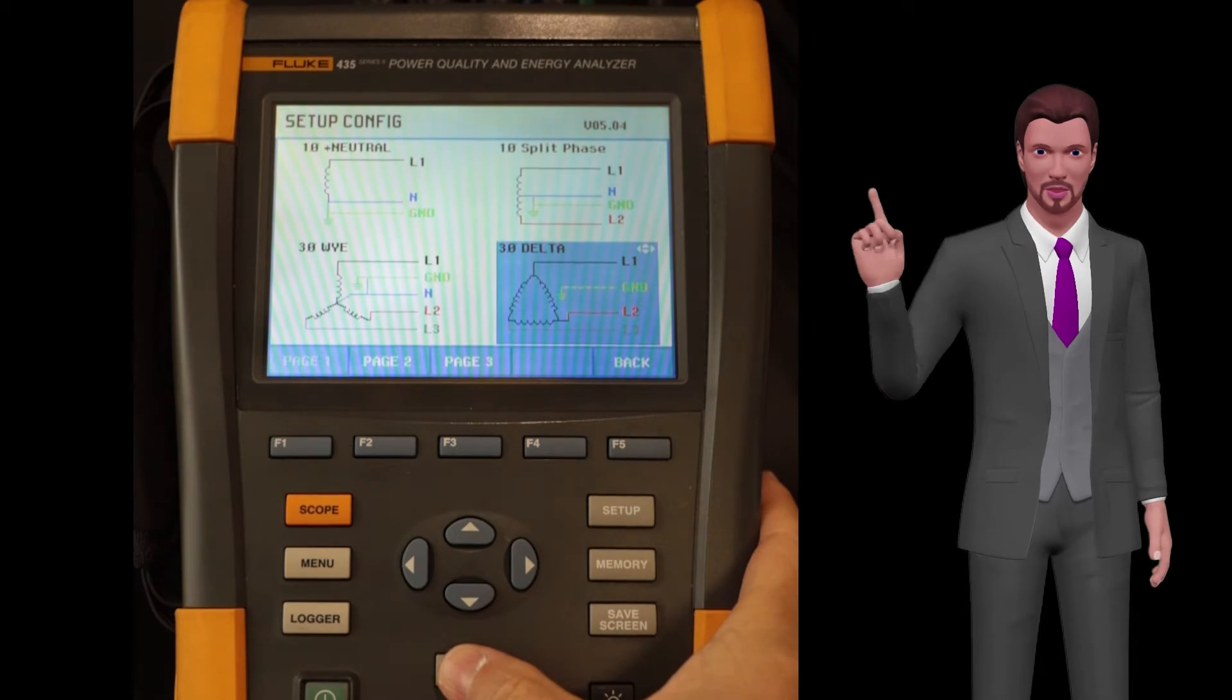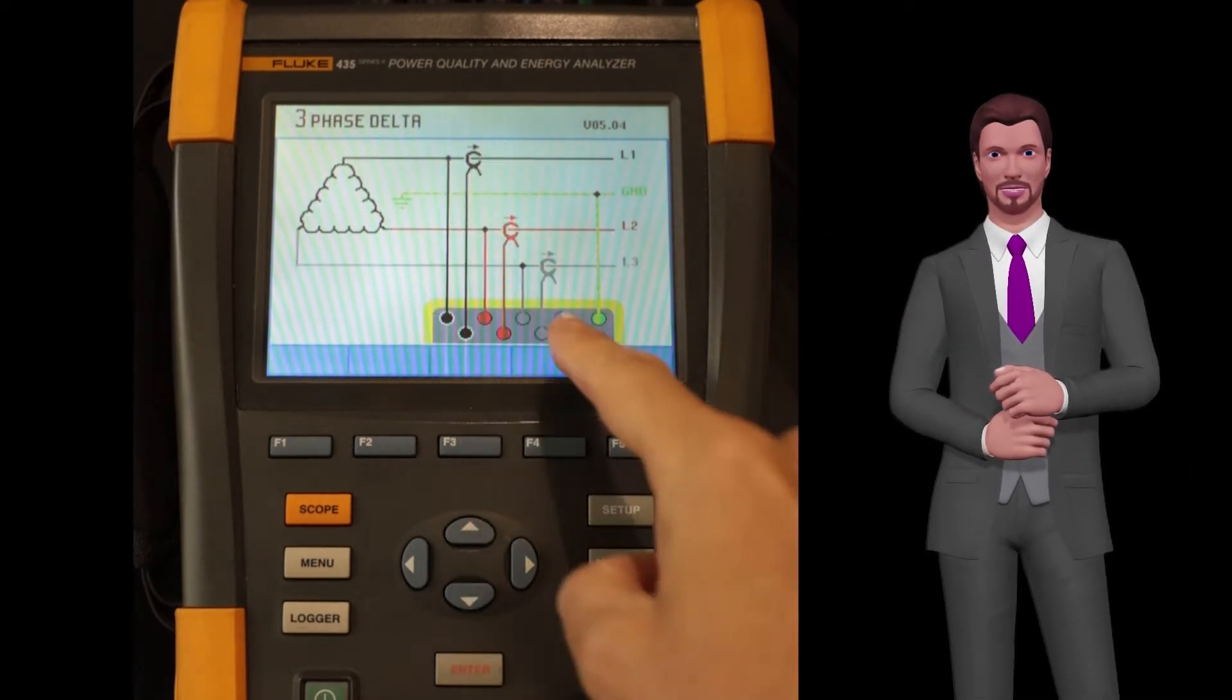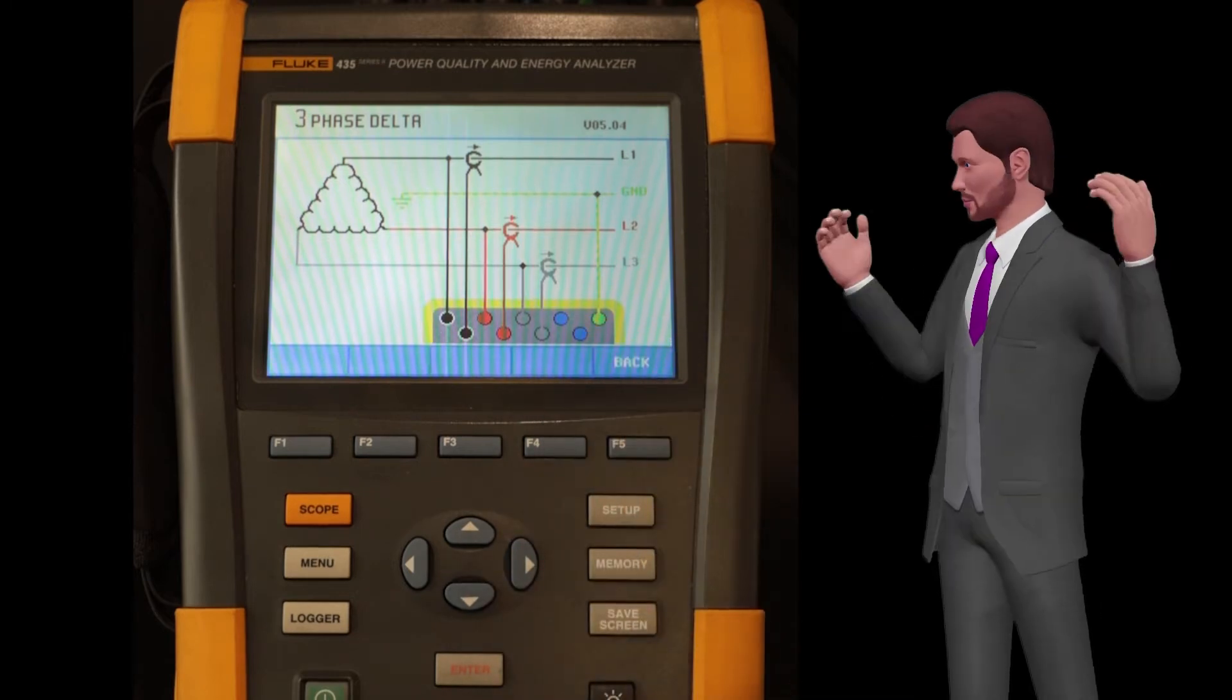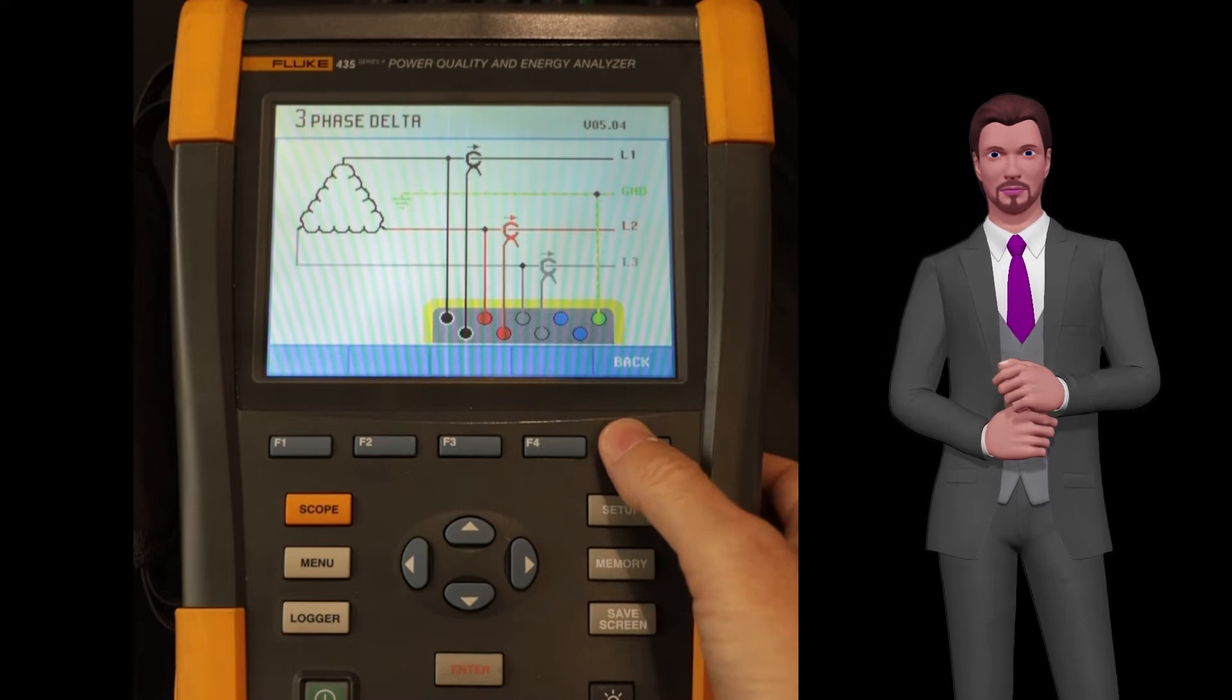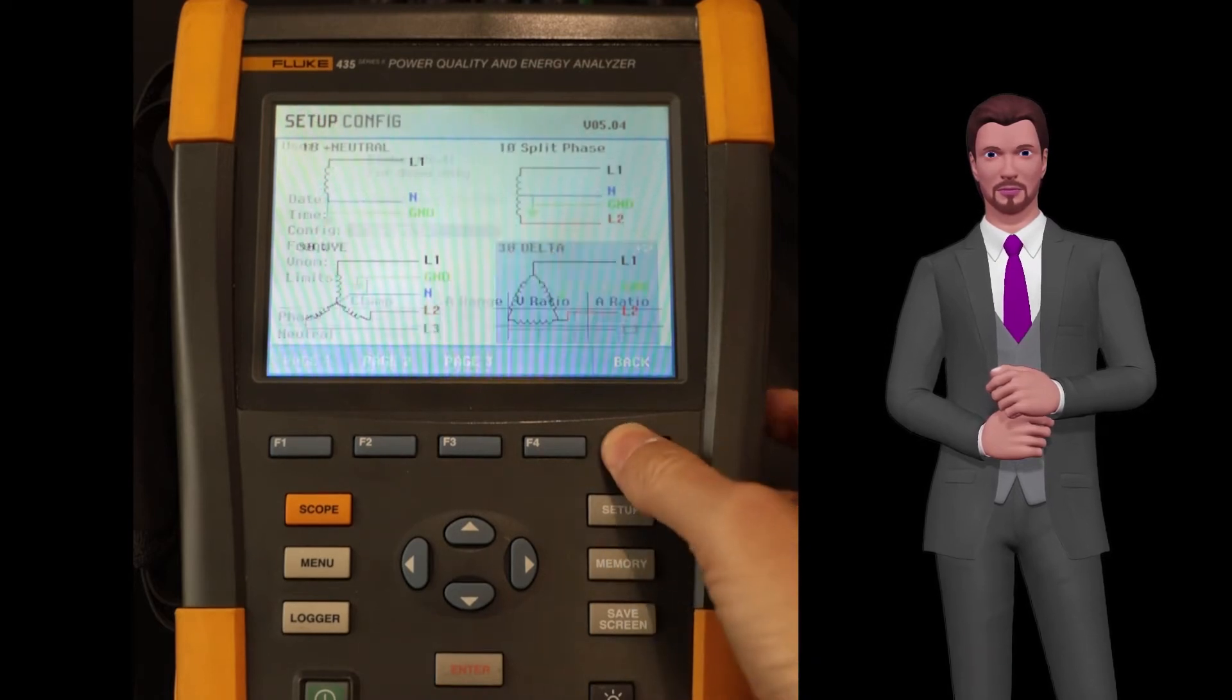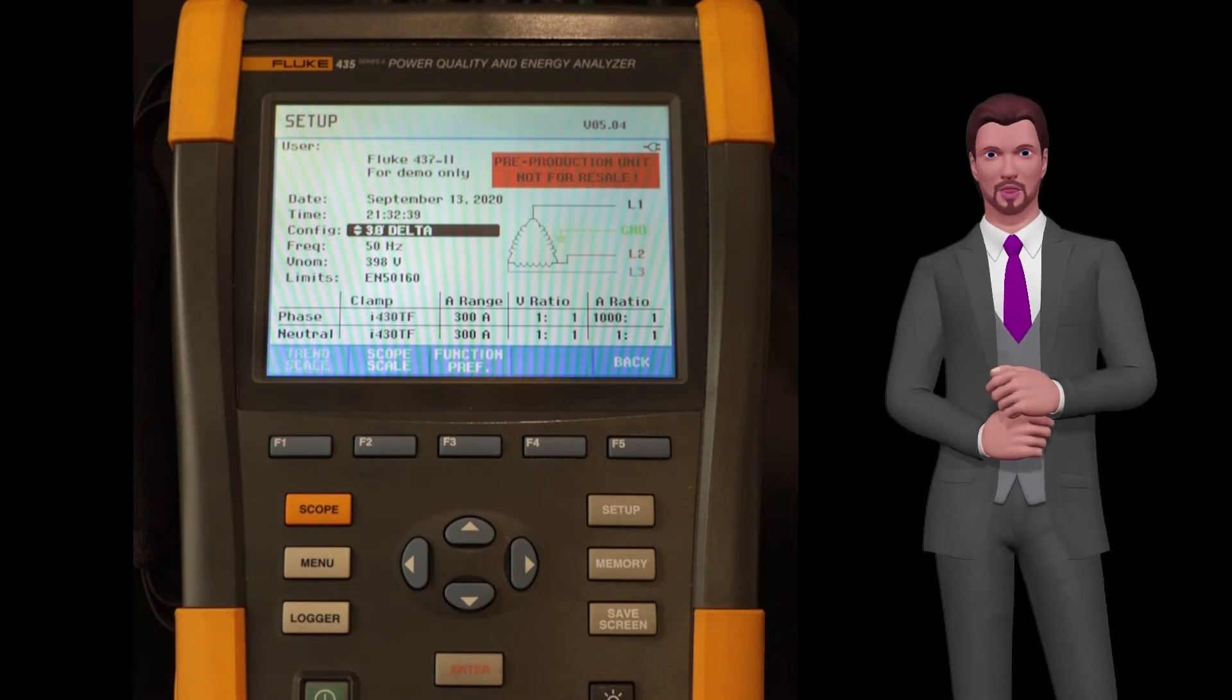Let's choose for example the triangle configuration and press enter. Now we are presented with the connection diagram of the voltage cables and the current probes, which is a good help to avoid making mistakes. We press F5 back twice and the triangle system called 3 0 delta appears selected.